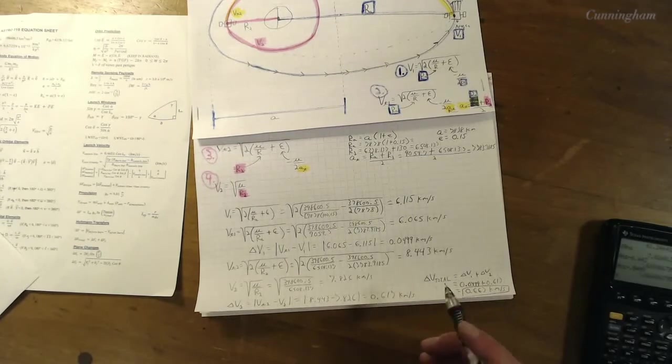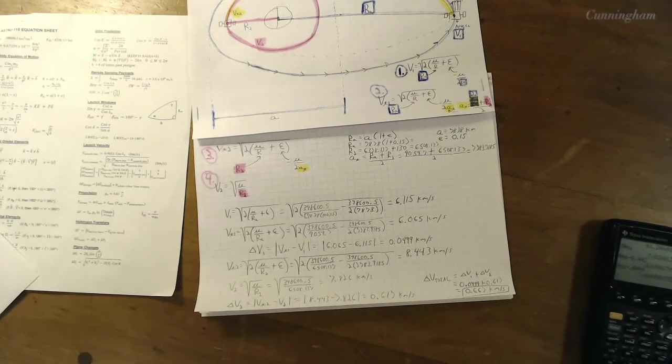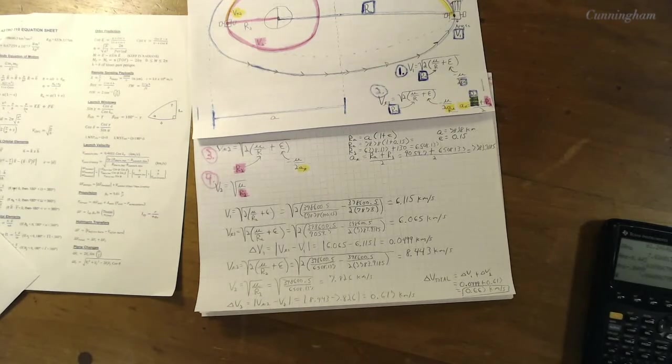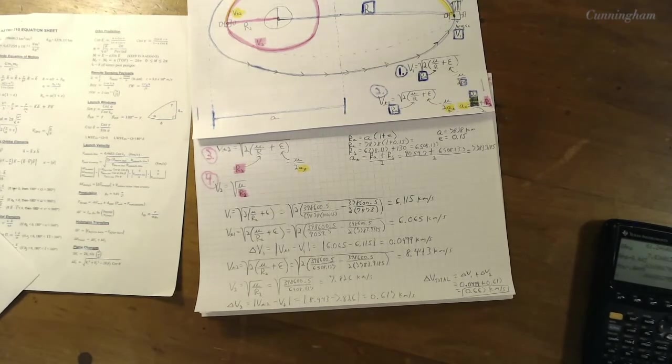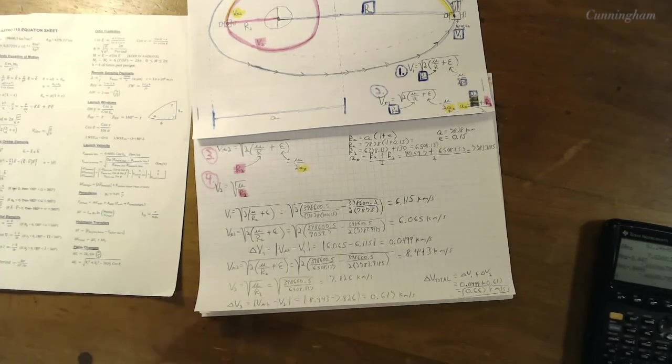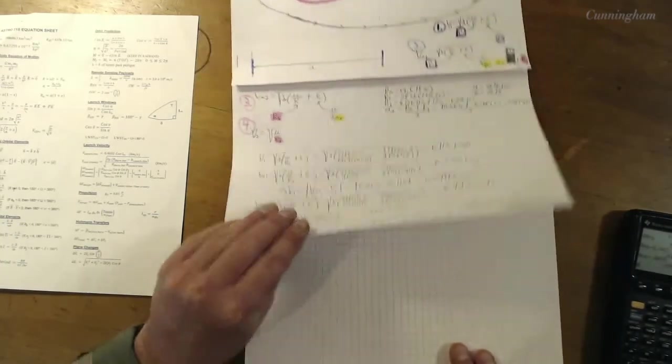Oh boy, let's see. Push this up. Square root of 7783.185 cubed over 398600.5. Okay, great.